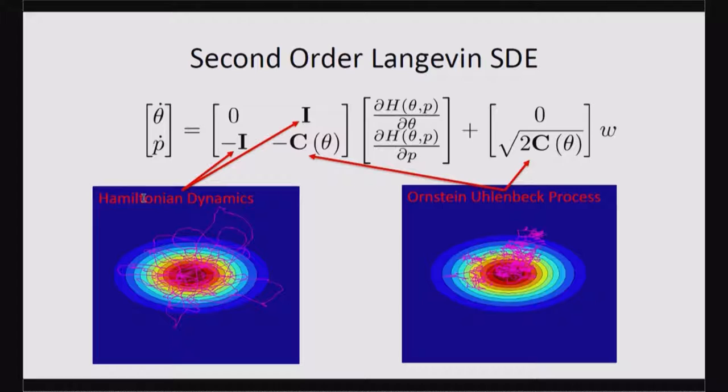And so if we then marginalize out the momentum, the stationary distribution is going to sample our posterior. And what's interesting is that this system is a combination of the Hamiltonian dynamics, which gets these nice coherent trajectories that conserve probabilities, and an Ornstein-Uhlenbeck process, which is like a damped random walk.